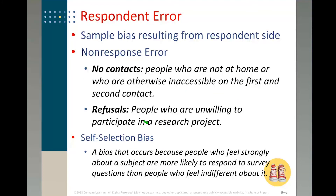Instead of going through the whole list, let me highlight a few biases that are easy to understand and very common — all related to sample bias. The first one is no contact: there are people you simply cannot contact or who are inaccessible. For example, if you're conducting phone interviews, nowadays with caller ID and telemarketing, a lot of people don't answer every phone call — so they would be a no-contact for a company conducting a survey by telephone.